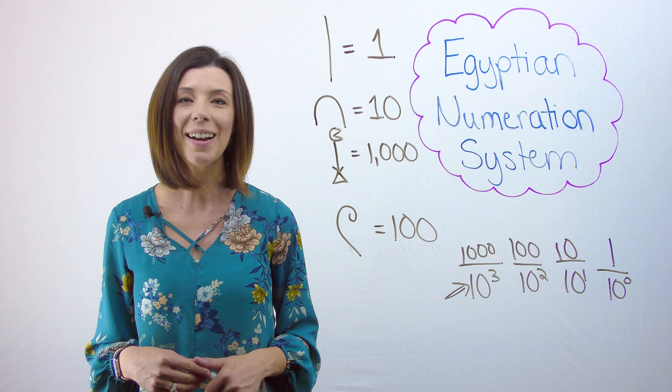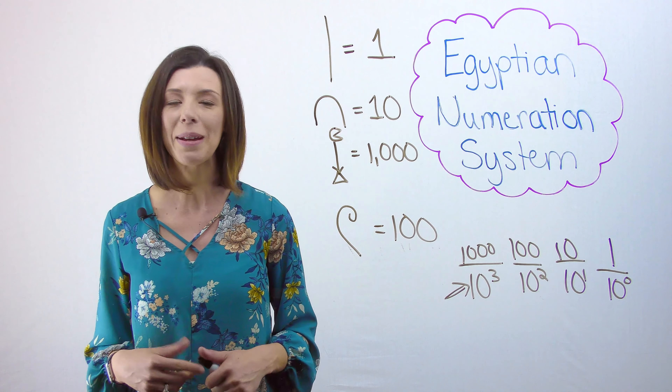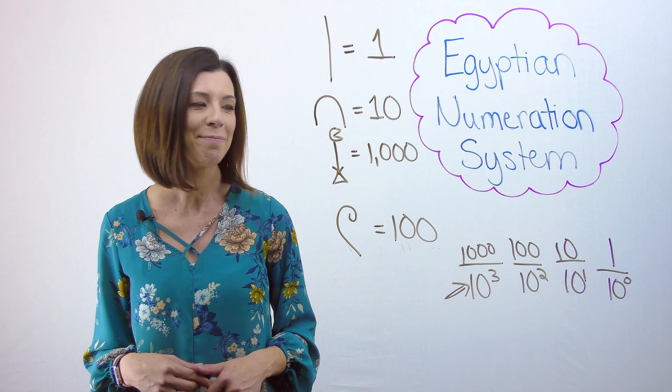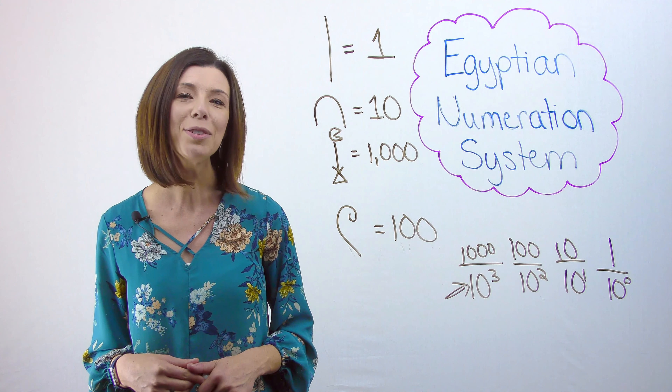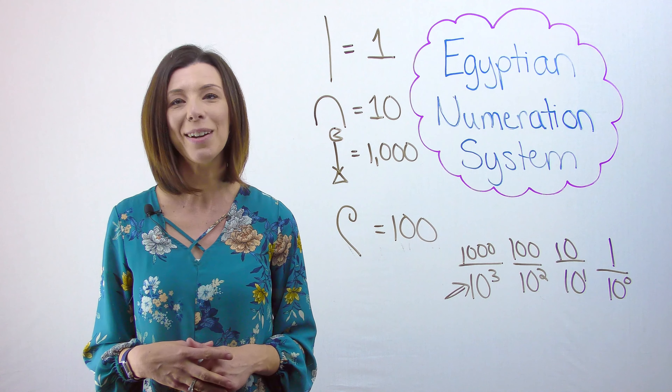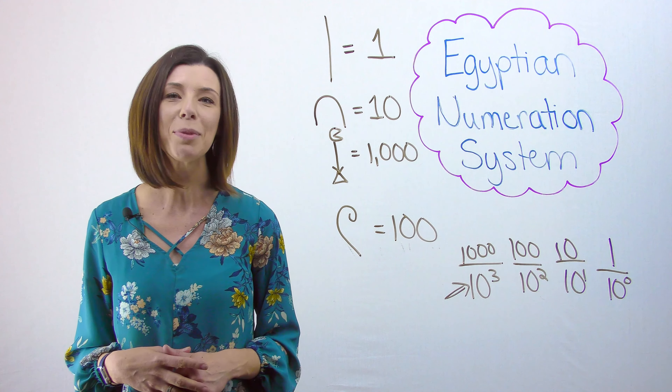Here's where it gets tricky. Not every ancient civilization operated in base 10 — I know it sounds crazy. As you look into other numeration systems, you'll see that not every civilization was in base 10; they were in other bases. That's all I'll tell you for now. I hope you found this video helpful and you now have a better idea of the Egyptian numeration system.